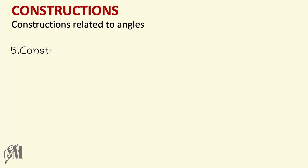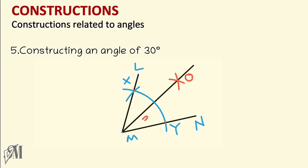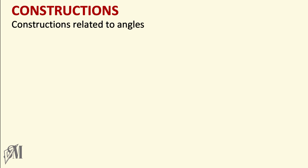The next section is how to construct an angle of 30 degrees. First construct an angle of 60 degrees, naming it LMN. Name the intersections of the arc with the two arms as X and Y. Keep the compass on X and draw an arc, then without changing the length bring it to Y and cut the previous arc. Join the intersection O with M. You have bisected the 60-degree angle, giving two angles each of 30 degrees.